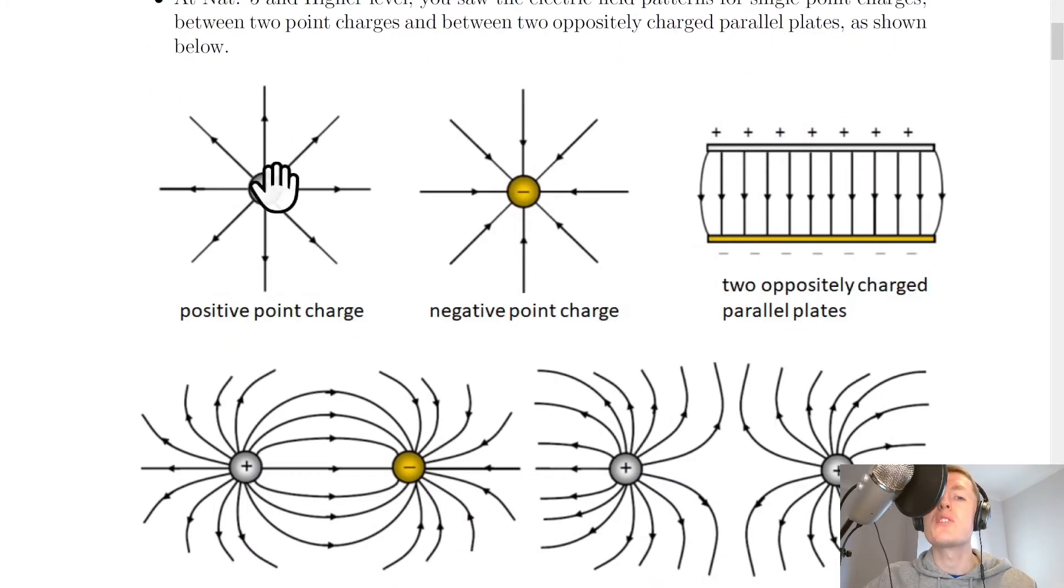So here for a positive point charge, we've got the electric field lines going out the way in a circular pattern called a radial field. We've also got for the negative point charge, the field lines going in the way this time. We then have for two oppositely charged parallel plates, if this is the positive plate on the top and the negative plate on the bottom, the field lines should go from the positive to the negative in a uniform field. So these two are radial fields with circular patterns, whereas this one is a uniform field.